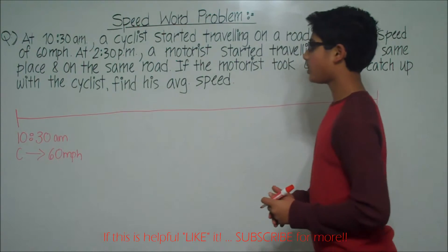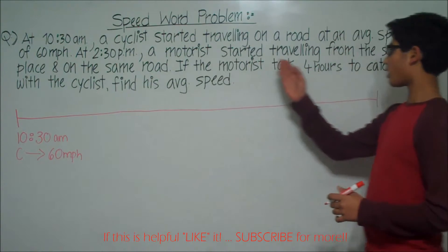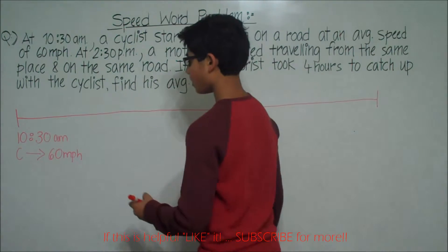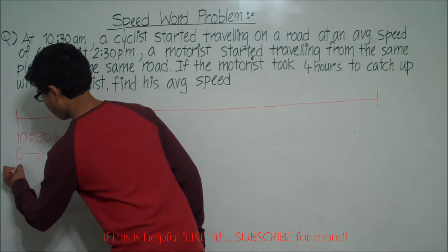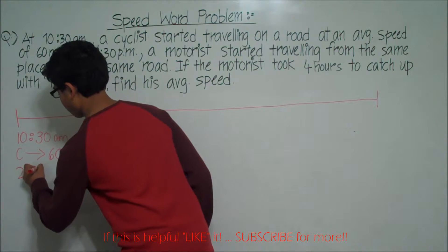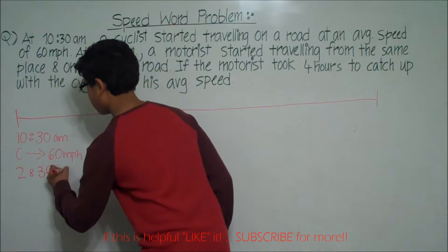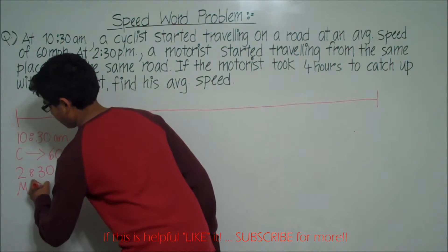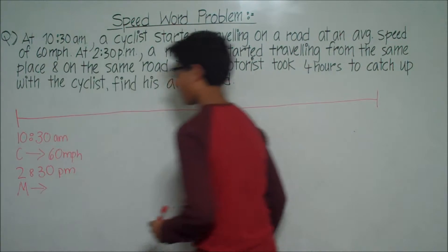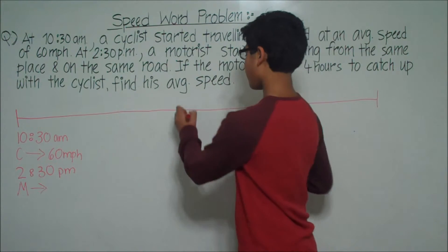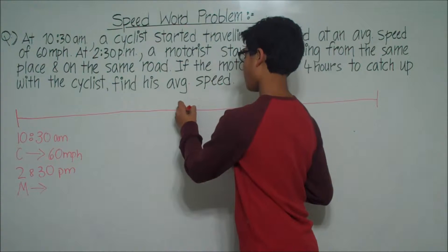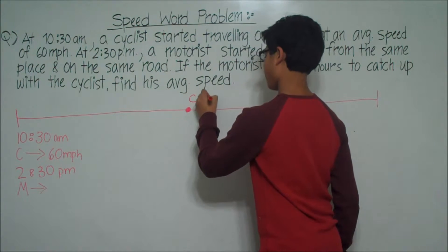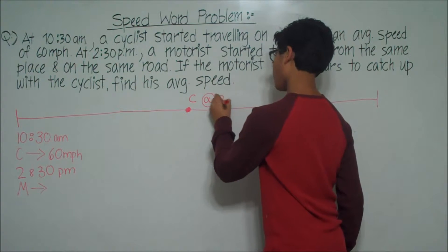At 2:30 pm a motorist started traveling from the same place and on the same road. The motorist started traveling this way and we do not know his speed. Let's say this is where the cyclist is at 2:30 pm.